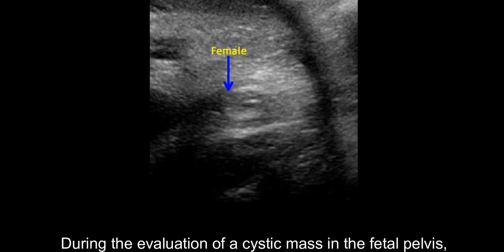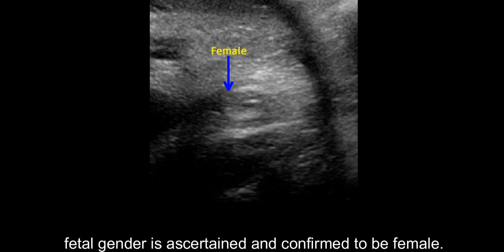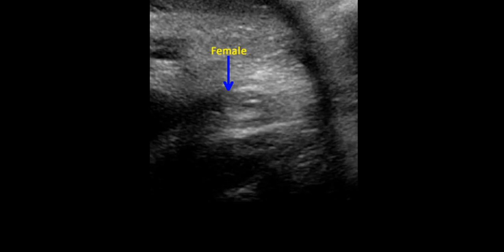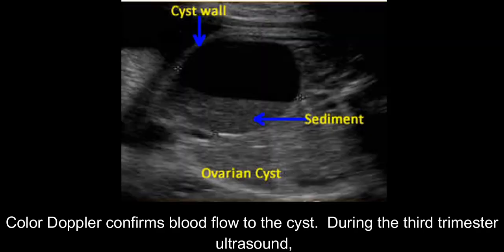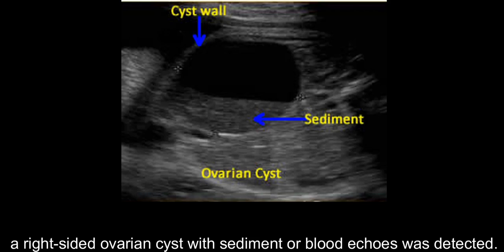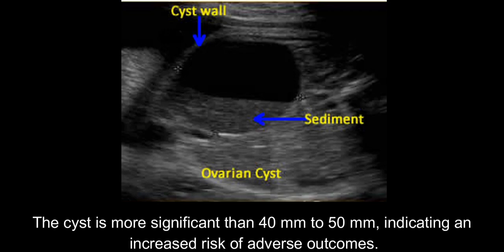During the evaluation of a cystic mass in the fetal pelvis, fetal gender is ascertained and confirmed to be female. Colored Doppler confirms blood flow to the cyst. During the third trimester ultrasound, a right-sided ovarian cyst with sediment or blood echoes was detected. The cyst is more significant than 40 mm to 50 mm, indicating an increased risk of adverse outcomes.